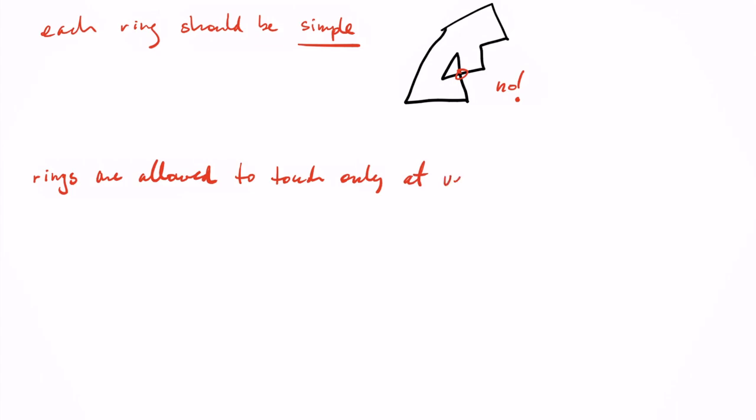The international standard prescribes how each ring must be represented. For example, a ring mustn't have duplicates and also should be simple, shouldn't have any self-intersection. And the standard also tells us how rings are allowed to interact with each other. Basically, two rings that can be the outer or the inner rings can touch but only at vertices. They're not allowed to touch along edges and they're also not allowed to overlap.